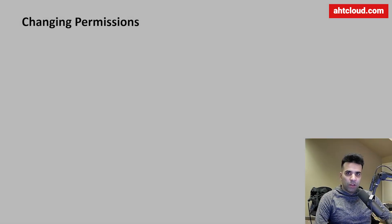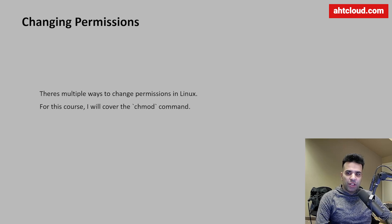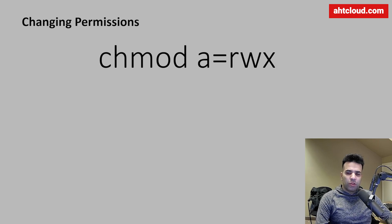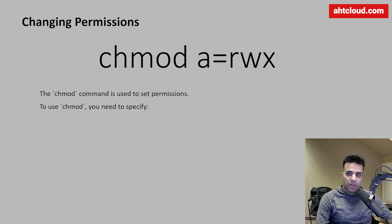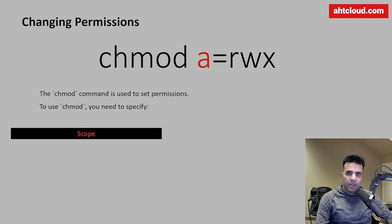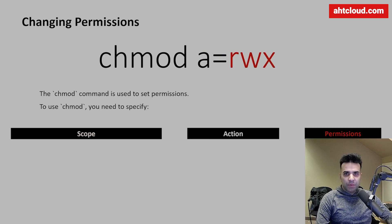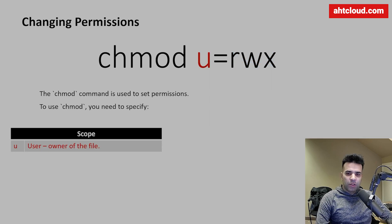Before we try anything in the terminal, let's cover how to change permissions. There are multiple ways to do this; for this course I'll be covering the `chmod` command. To use `chmod`, you need to specify three things: the scope, the action, and the permission. For scope, 'u' represents the owner of the file, so the following example applies permissions only to the owner.